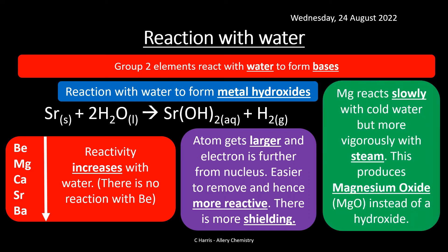Magnesium does react with water, but it's really slow. If you've ever put magnesium ribbon in water, it doesn't really do a lot. Normally, if you want a reaction from magnesium, you heat it with steam. This produces a slightly different product — instead of producing magnesium hydroxide, you produce magnesium oxide. So magnesium hydroxide is only formed when magnesium reacts with cold water — that's the slight quirk here.